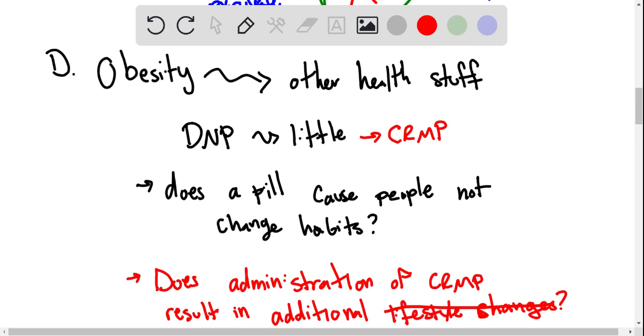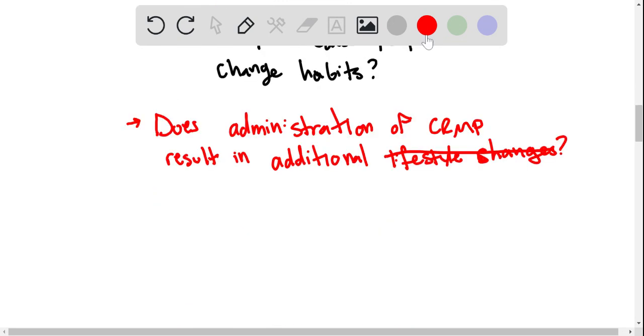And perhaps you're just interested in one small facet. So instead of what does it mean to be healthier in a holistic way, a particular study would be more likely to ask just one very specific question. So I might be more inclined to say something like, does the administration of CRMP result in continued weight loss after some number of years? So do they just lose weight while they take it and then gain it back, or does it stay off?